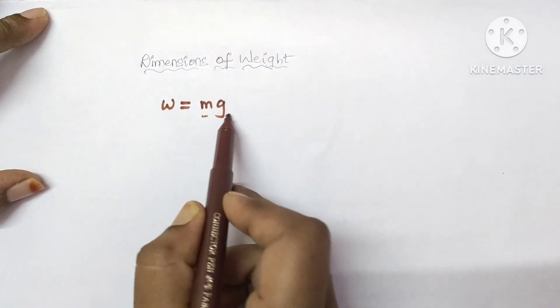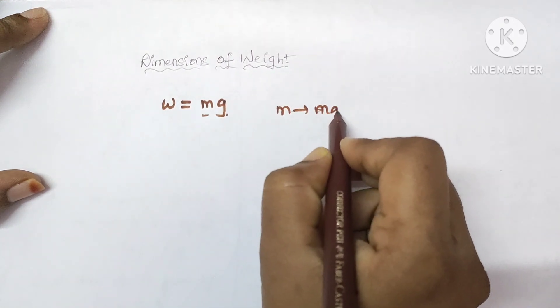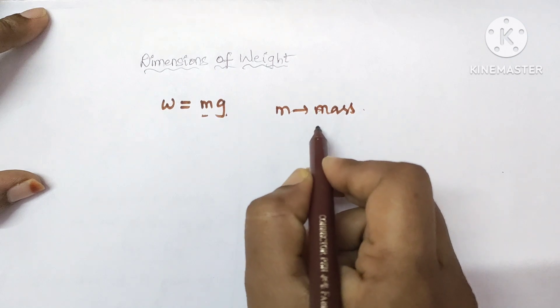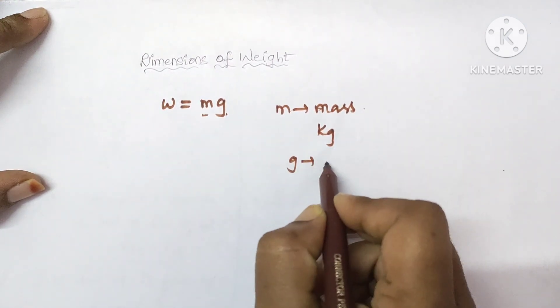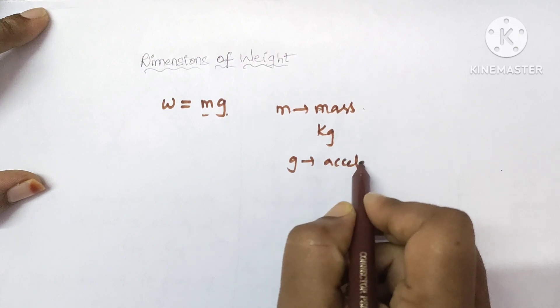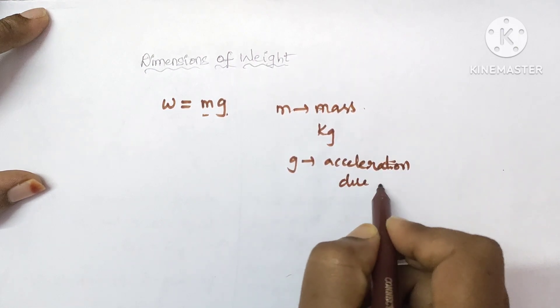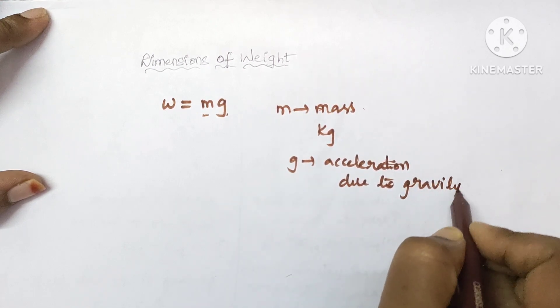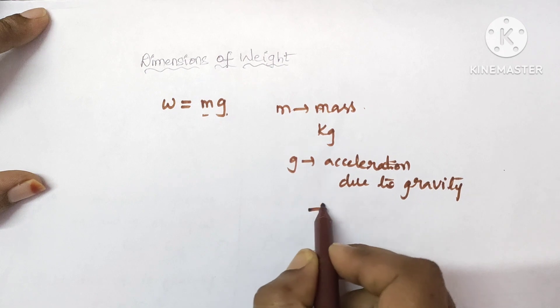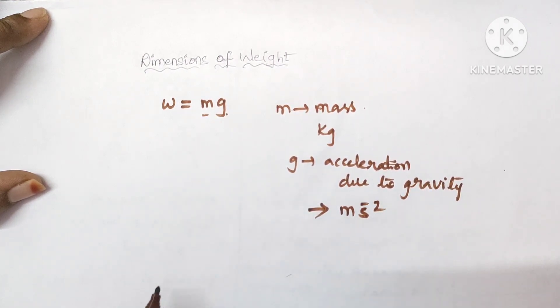Now, write the SI units for each of the term. For mass, here M is mass and whose SI unit is kg, and g is acceleration due to gravity and whose SI unit is meter per second square.